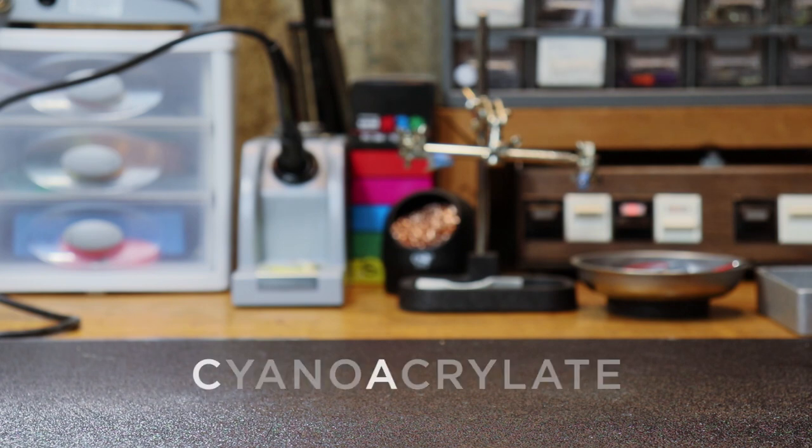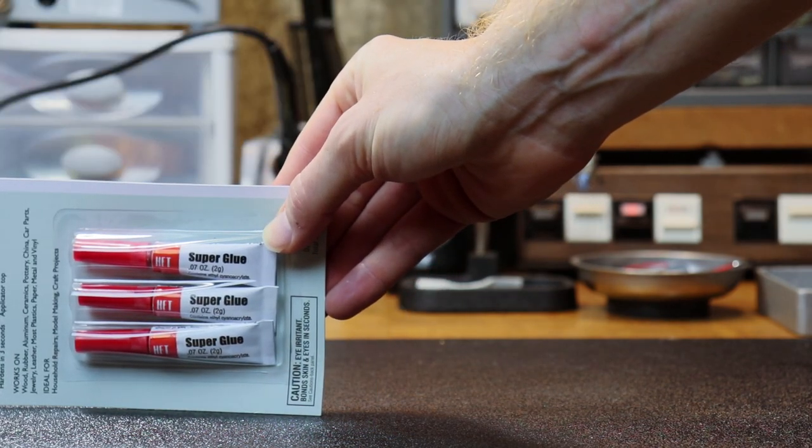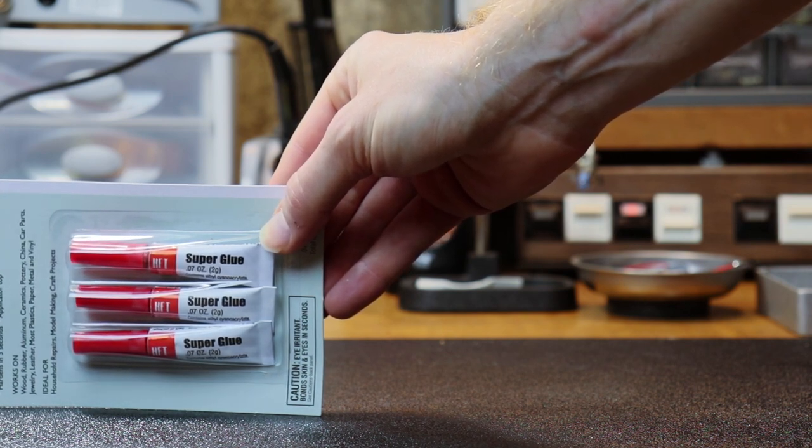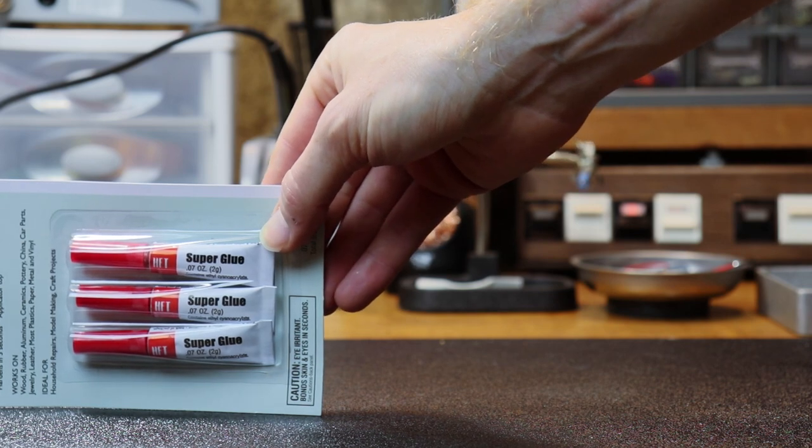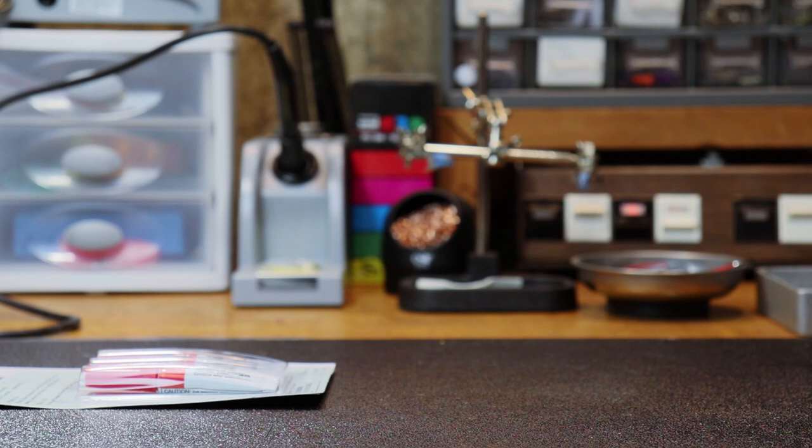The CA glue that most people are familiar with is super glue, which usually comes in this kind of toothpaste tube and it's pretty thick. I don't think I've ever been able to use it without either squirting it out the back of the tube or just getting it everywhere and gluing my fingers together and making a huge mess. So we're not going to use this and I don't recommend that you use it either.